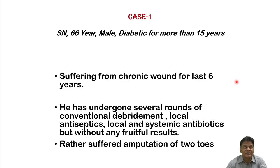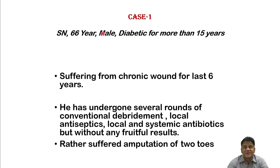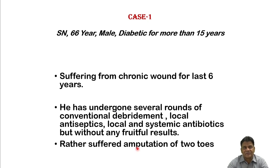I will present two real cases followed by a randomized controlled trial. The first case is a 66-year-old diabetic male, diabetic for more than 15 years, suffering from a chronic wound for the last six years. He underwent several rounds of conventional debridement, local antiseptics, and local and systemic antibiotics — all without benefit. Despite this, he suffered amputation of two toes.